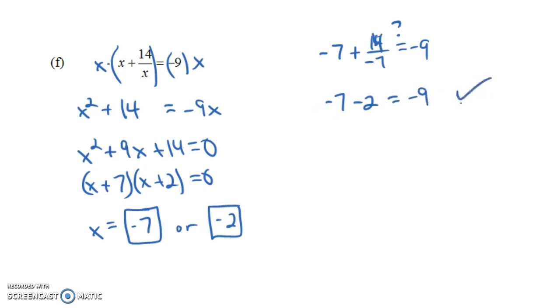Yeah, negative 7 minus another 2 does equal negative 9. And you can also check minus 2. That will also be a solution. In fact, let's do it. Minus 2 plus 14 over minus 2 equals minus 9. And this would say minus 2 minus 14 equals minus 9, and that's true. So negative 7 and negative 2 both work. But notice we ended up getting two solutions to this rational equation.